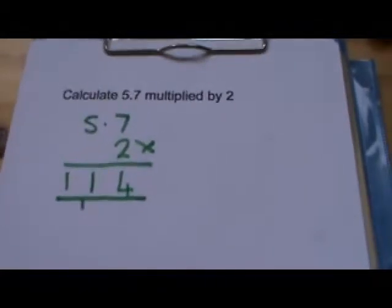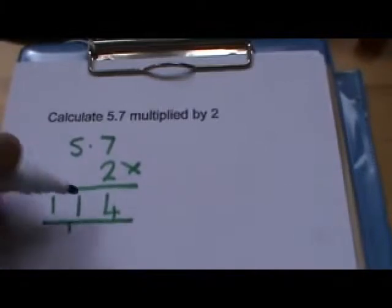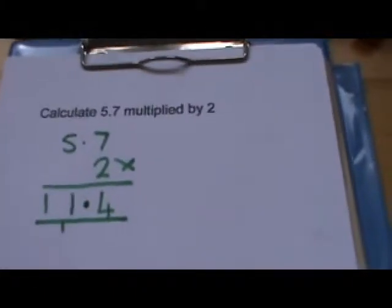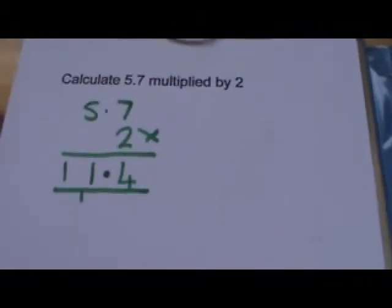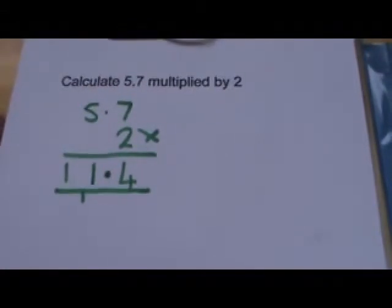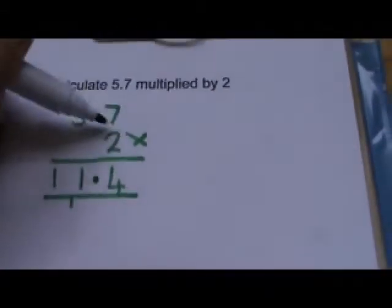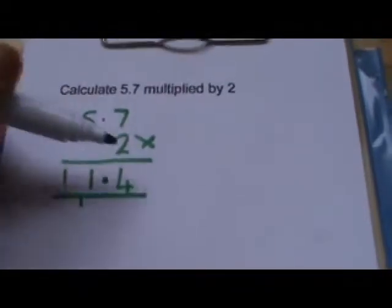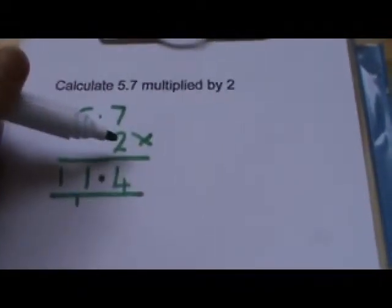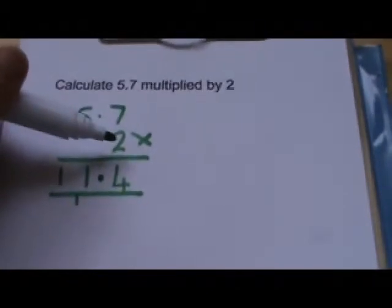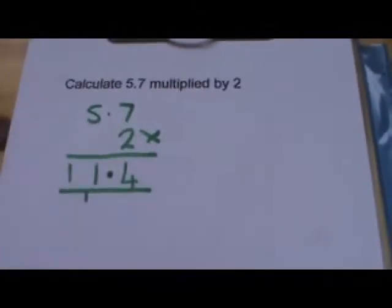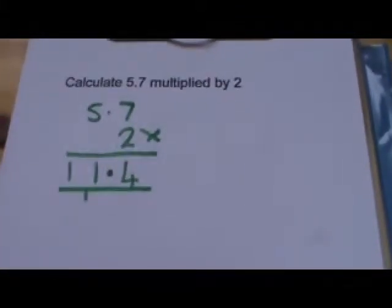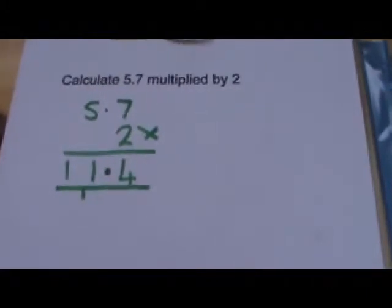So we can see that the sensible answer is 11.4. Another way to work it out is to count in your question how many numbers there are after the point. So in the 5.7, the 7 is after the point, so that's one number. The 2 hasn't got any numbers after the point. So there is only one number after the point in total. So there must be one number after the point in the answer. So that's why 11.4 is the correct answer.